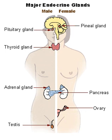A hormone is any of a class of signaling molecules produced by glands in multicellular organisms that are transported by the circulatory system to target distant organs to regulate physiology and behavior. Hormones have diverse chemical structures, mainly of three classes: eicosanoids, steroids, and amino acid or protein derivatives including amines, peptides, and proteins. The glands that secrete hormones comprise the endocrine system.